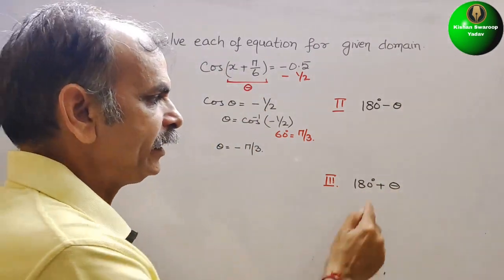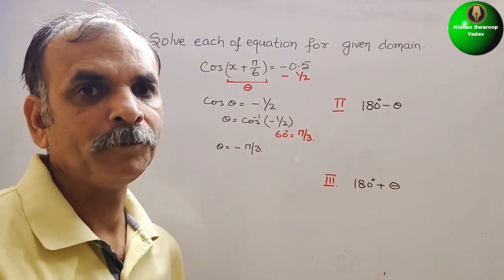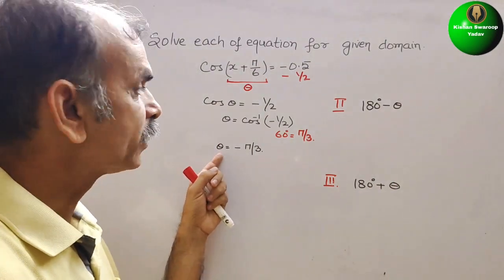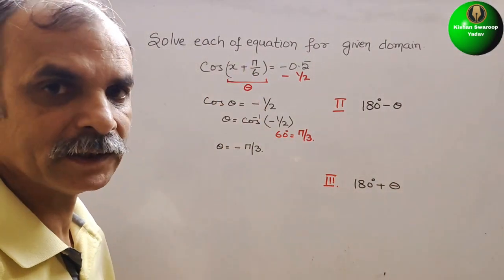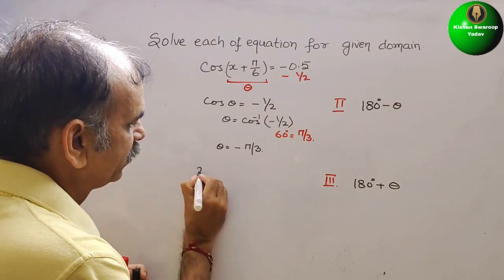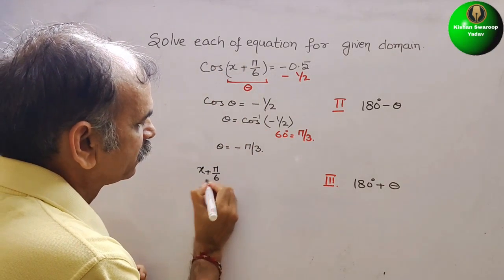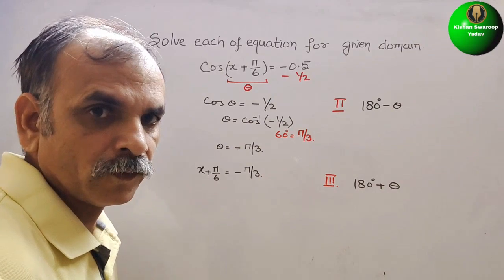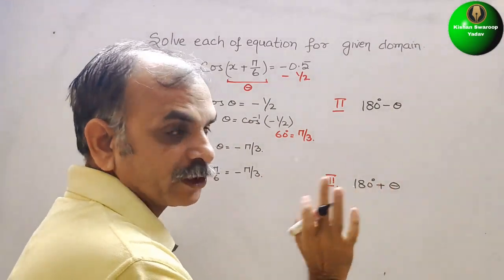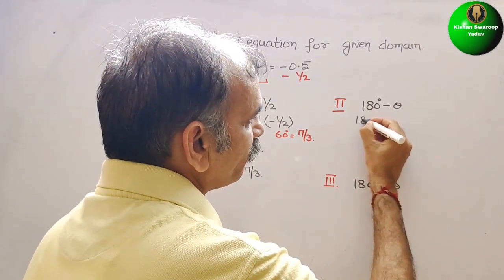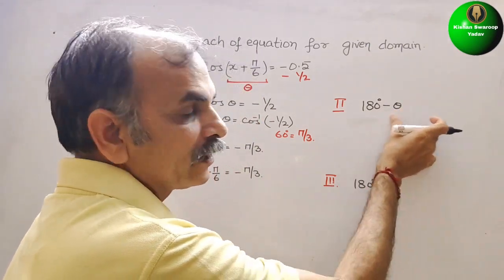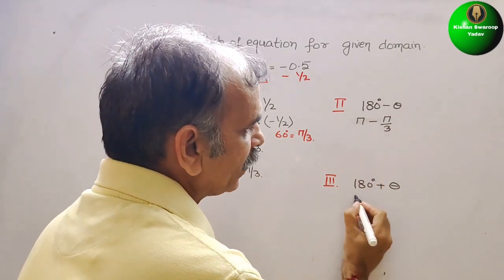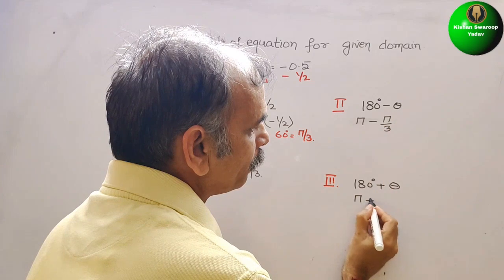Now theta is nothing but π/3. That only we have to substitute here. But theta is what? Theta is x + π/6. That only we will write. x + π/6 = -π/3. So here we will substitute theta. We will get 180 degrees, which is π, so π - π/3. And here we will get π + π/3.